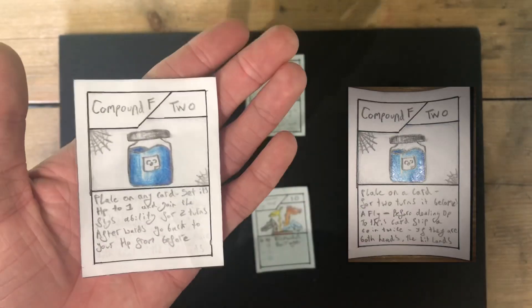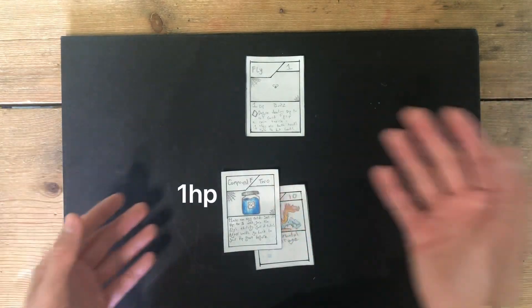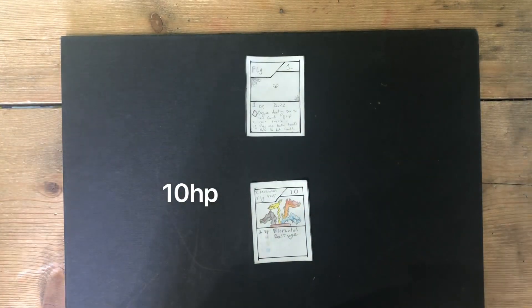Compound F has been changed so that when you play it on a card, it sets it to 1 HP, but with the Fly's ability. Then, after the 2 turns, you go back to whatever HP you had before you played it.